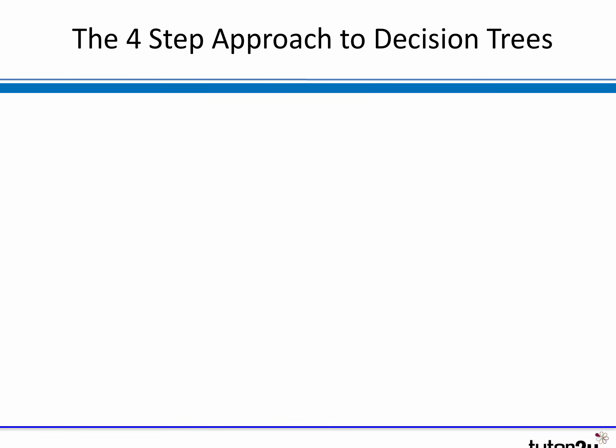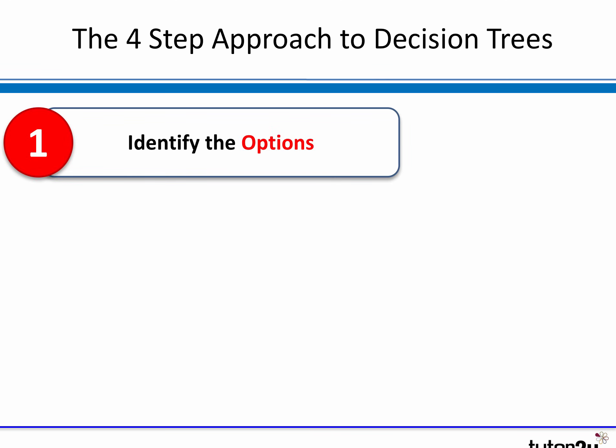There is a simple approach to building a decision tree. It's pretty unlikely you'll be asked to build one from scratch — you may be asked to complete a partially built tree or perhaps just to calculate and interpret information given. But let's go through the four steps. The first thing we do is identify what options are facing us — what are the choices?